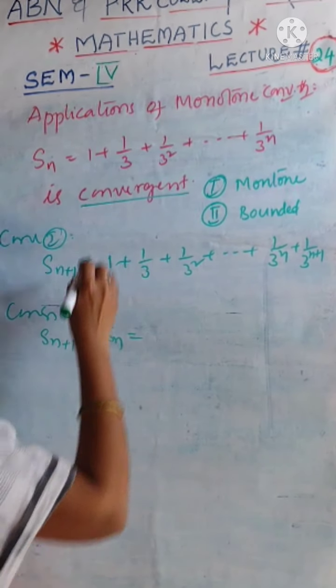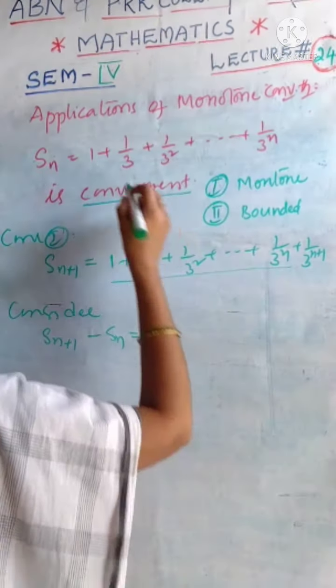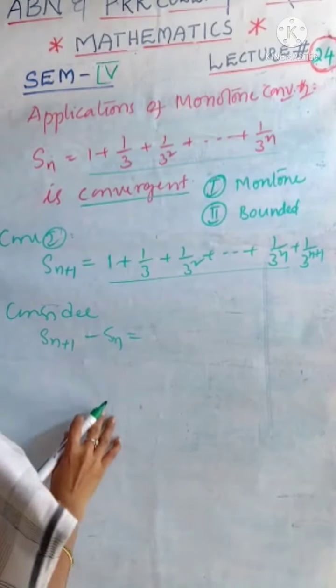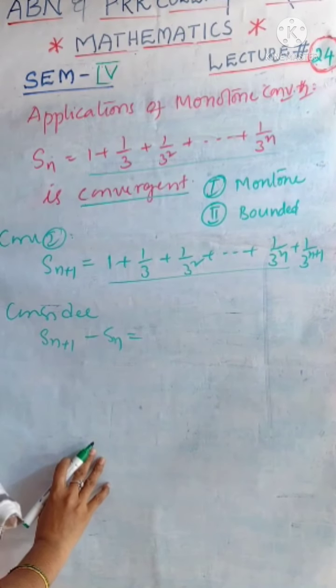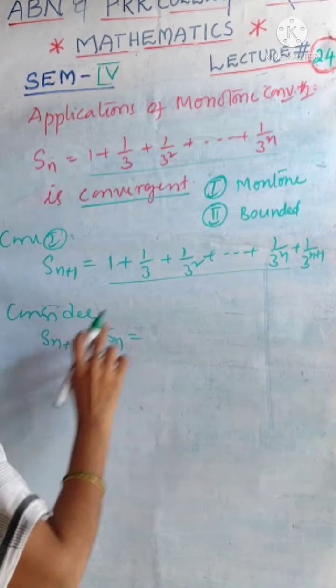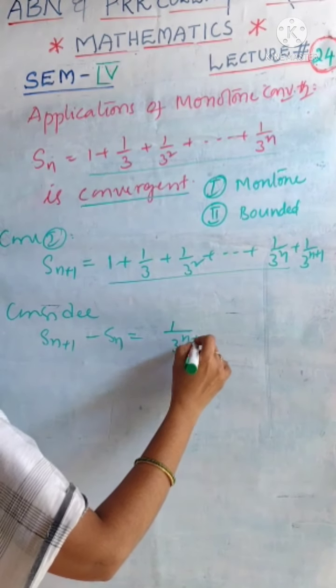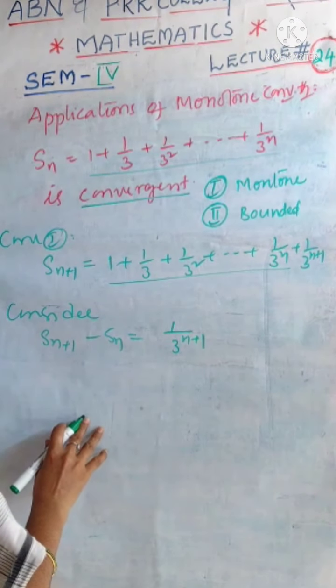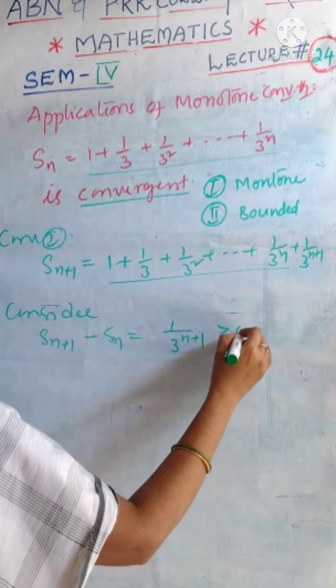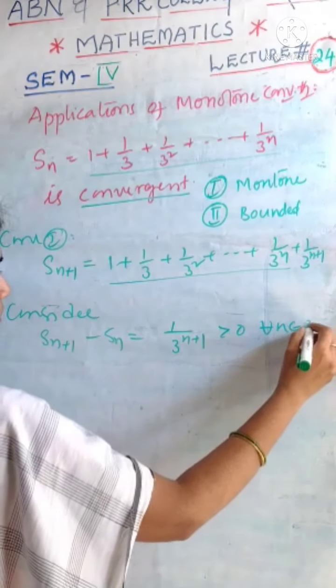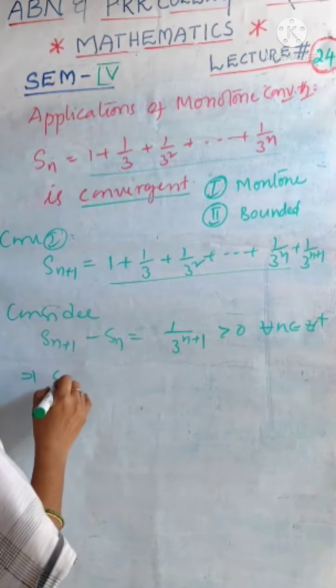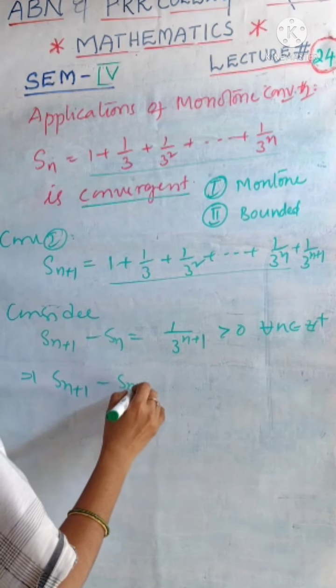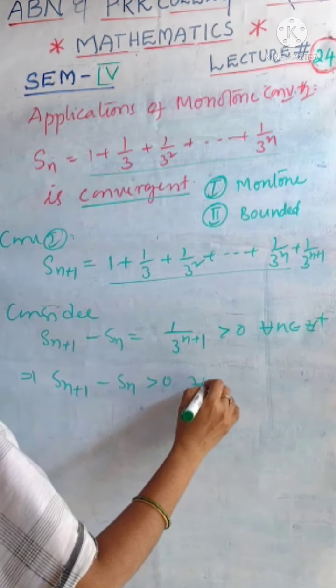Observe that Sn and Sn plus 1 consist of the same terms and Sn plus 1 contains an excess term, 1 by 3 power n plus 1. Obviously this is positive. That means Sn plus 1 minus Sn value is positive for every n.